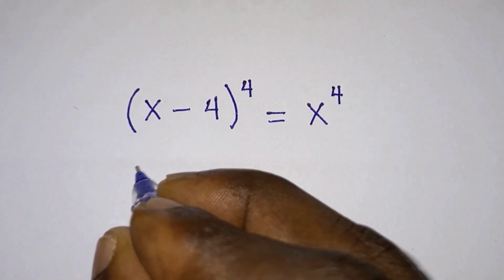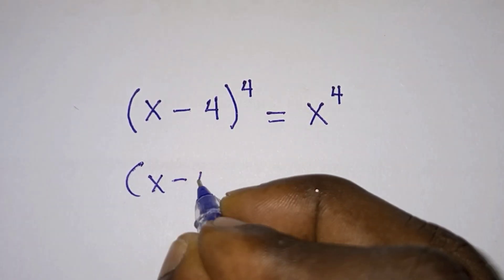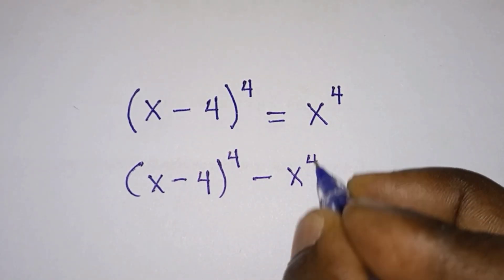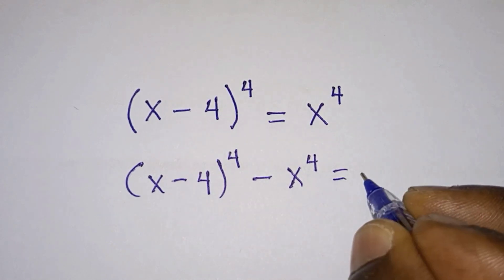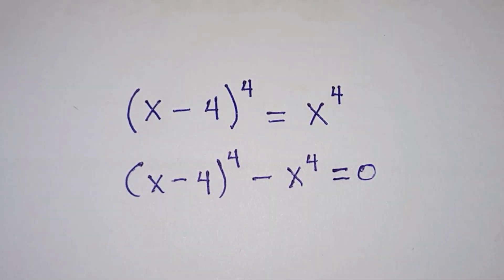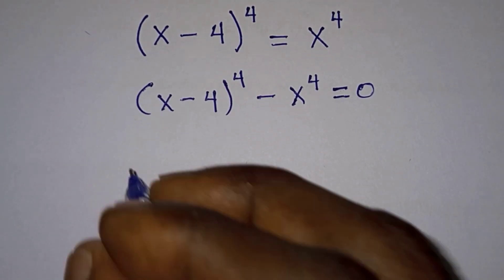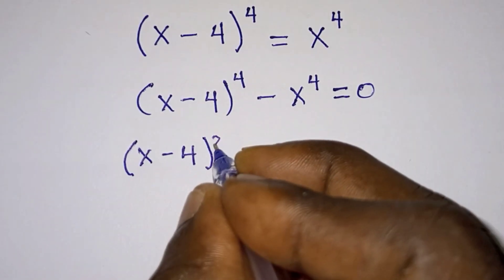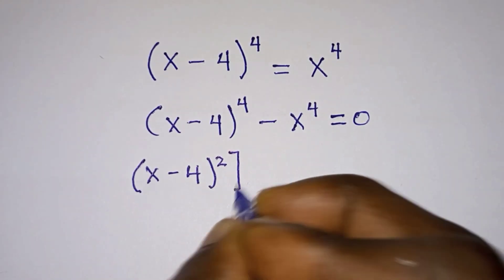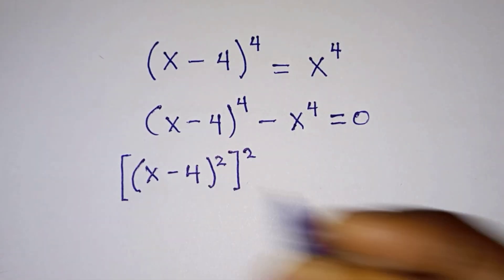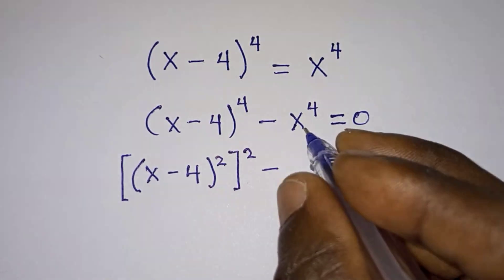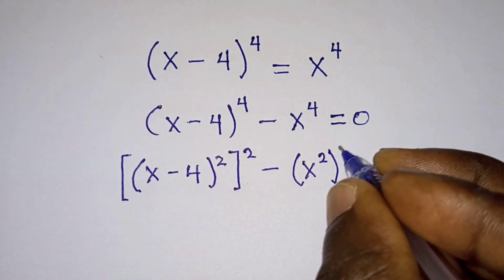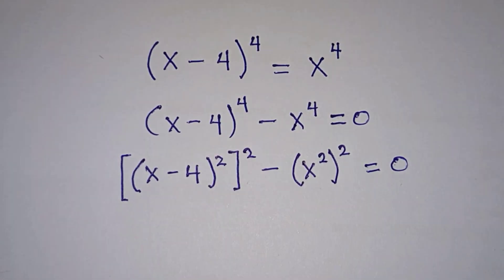First of all, we're going to write the problem as (x minus 4) to the power 4 minus x to the power 4, and this is equal to 0. Then we will rewrite it as (x minus 4) to the power 2, squared, minus (x to the power 2) squared, and this is equal to 0.